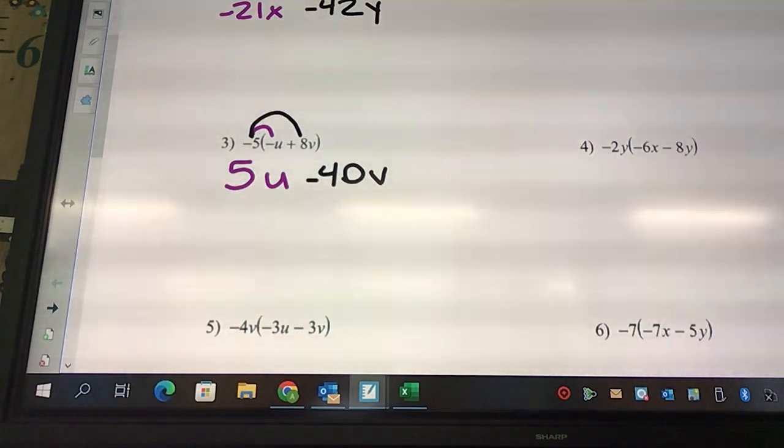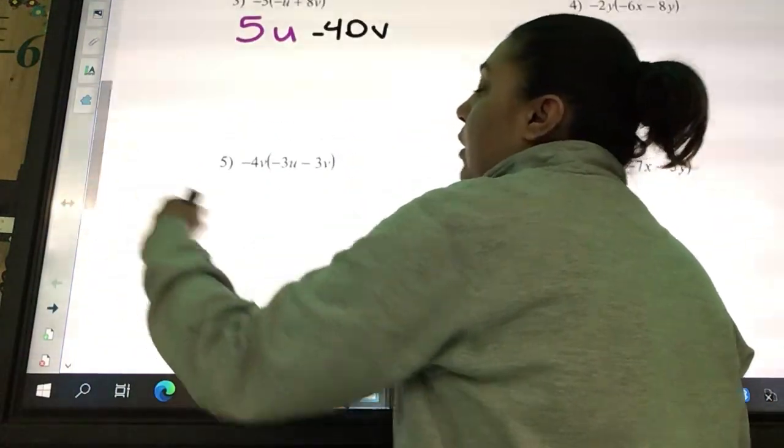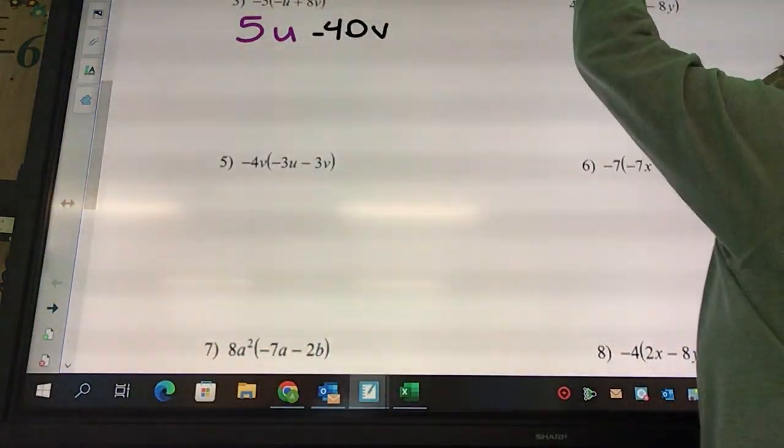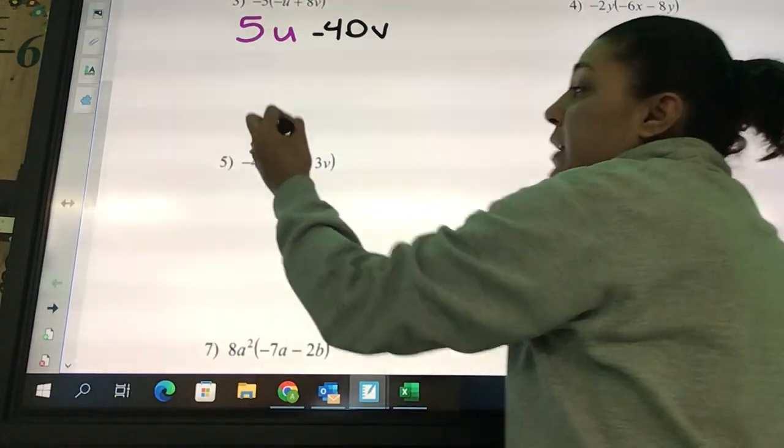That's a basic distributive property that you've seen, and we can add more on the outside, which is what we will continue to do. Negative four times negative three...